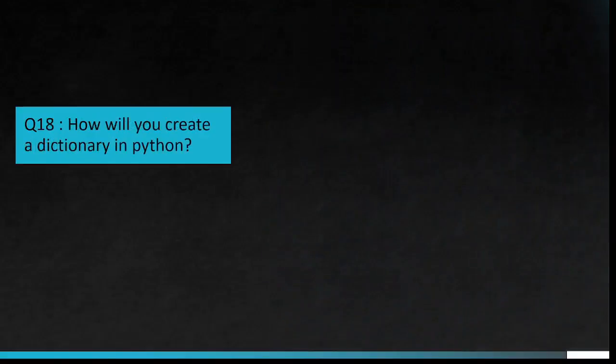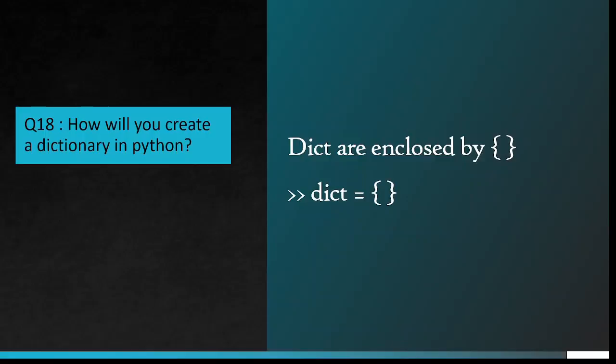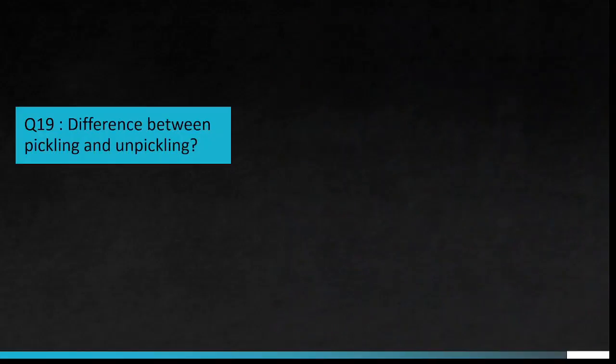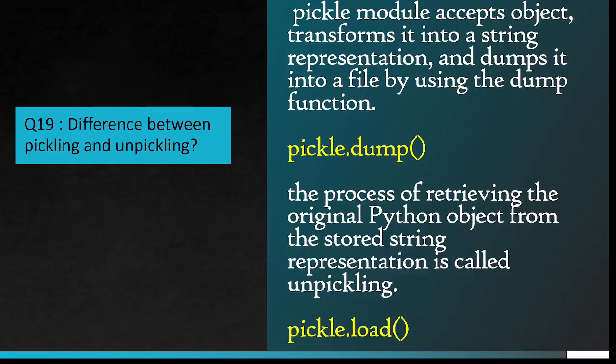Python's dictionaries are kind of hash table type. Dict work like associative arrays and consist of key-value pairs. Question number 18: How will you create a dictionary in Python? Dicts are enclosed by flower brackets. Dict equals open and close flower bracket. Question number 19: Difference between pickling and unpickling?